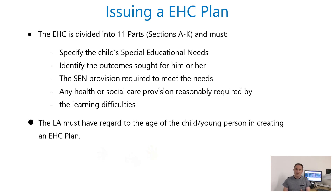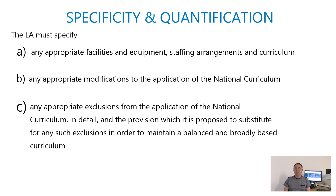So how do local authorities approach issues of specificity and quantification? The regulations accompanying the Children and Families Act identify the kind of things the local authority has to address when drafting the EHC plan. Those things can be summarised as appropriate facilities required for the child, any equipment that may be needed, the staffing arrangements — so the level of adult support — the training and experience of the staff, and whether there's any modification necessary to the national curriculum.